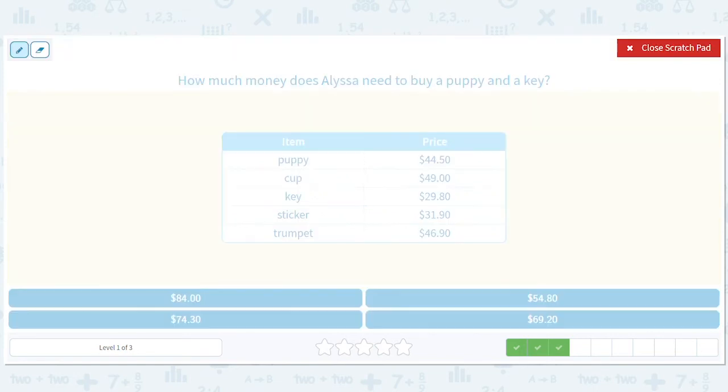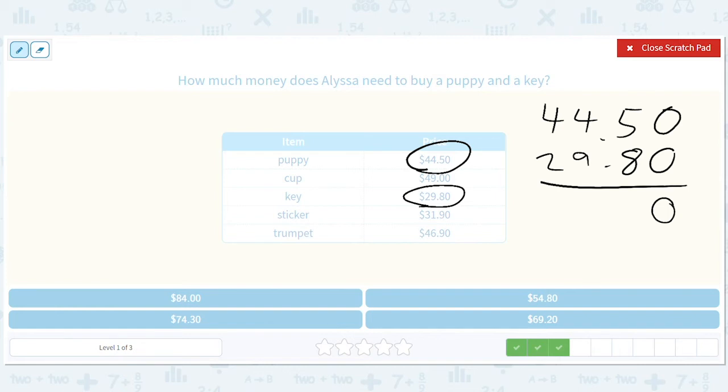How much money does a listener need to buy a puppy and a key? Here's a puppy, here's a key. $44.50, $29. 0, 8 plus 5 is 3, it gives us a 1 here. So we have a 14, another 1 here, so $74.30. Another way of seeing that is that this is almost 30 bucks. So if you add 30 bucks to $44.50, you get $74.50 and then you subtract 20 cents and you get $74.30.